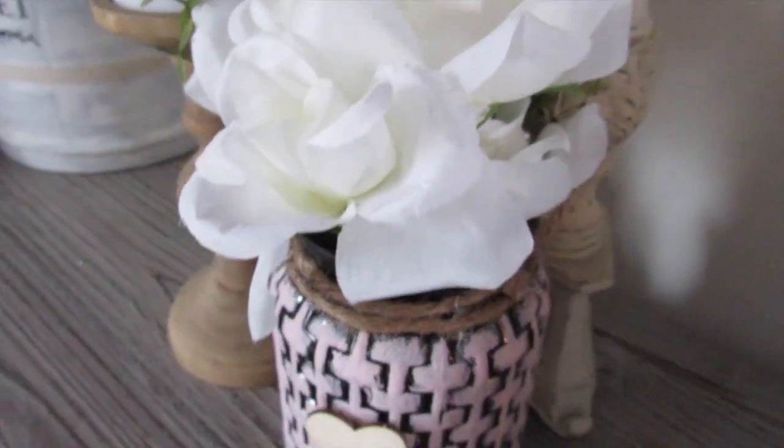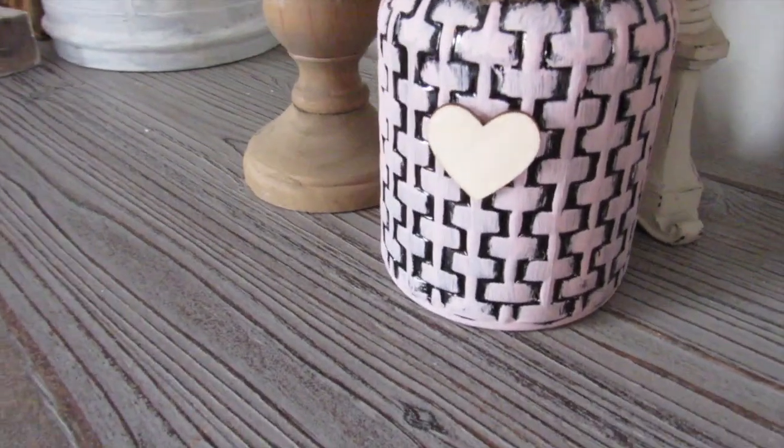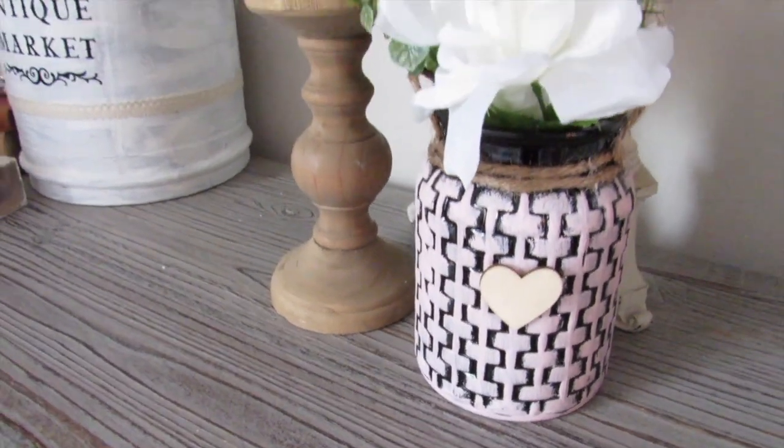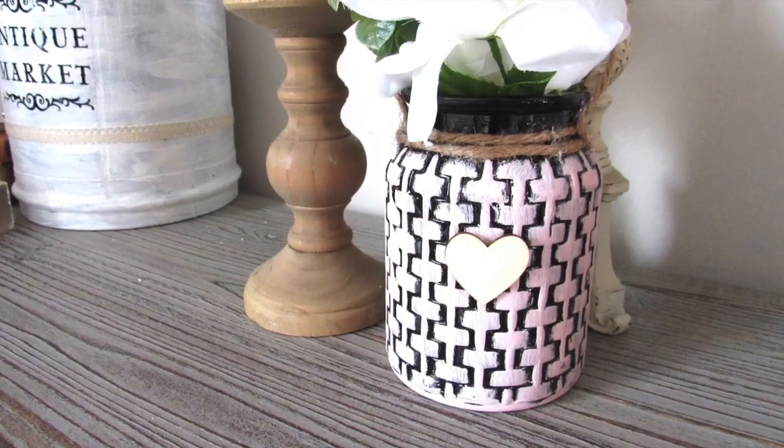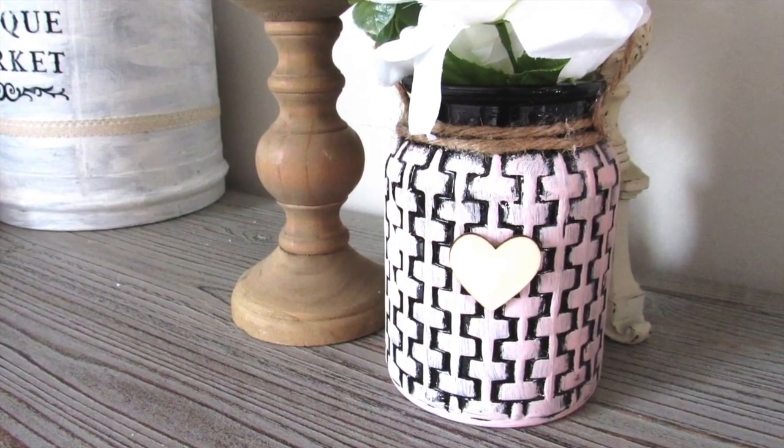Then I added some Dollar Tree florals to this as well as some eucalyptus picks that I've had for a while from either Walmart or Hobby Lobby. I just love how bright this is. Again, this is another piece that can easily transition into the spring, and it was made using Dollar Tree items. That is a win.